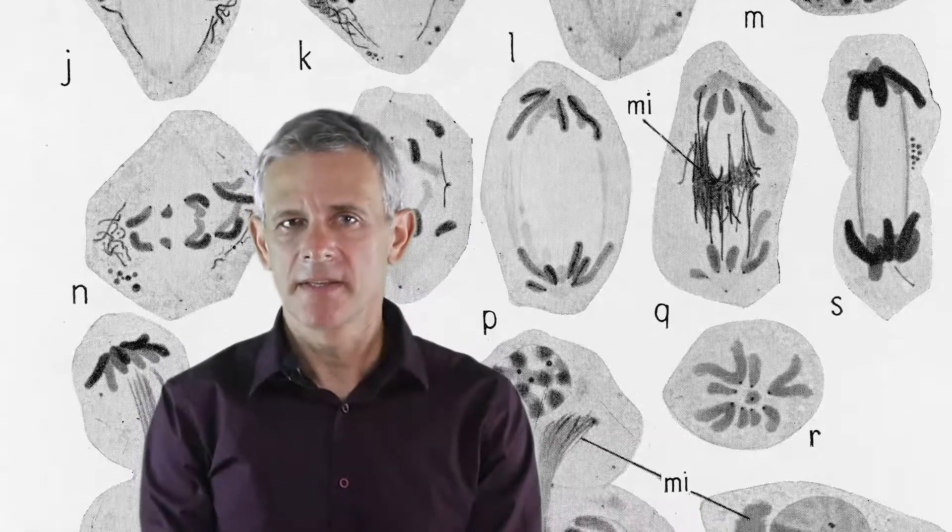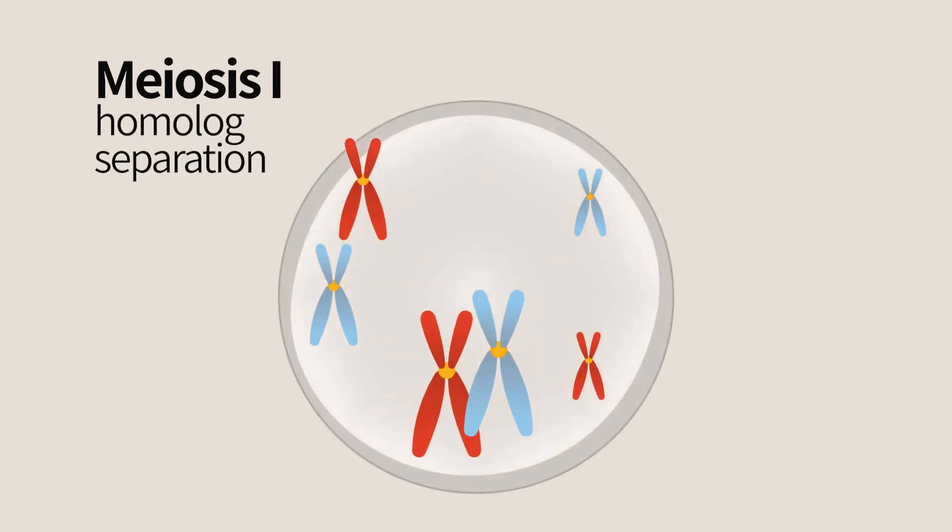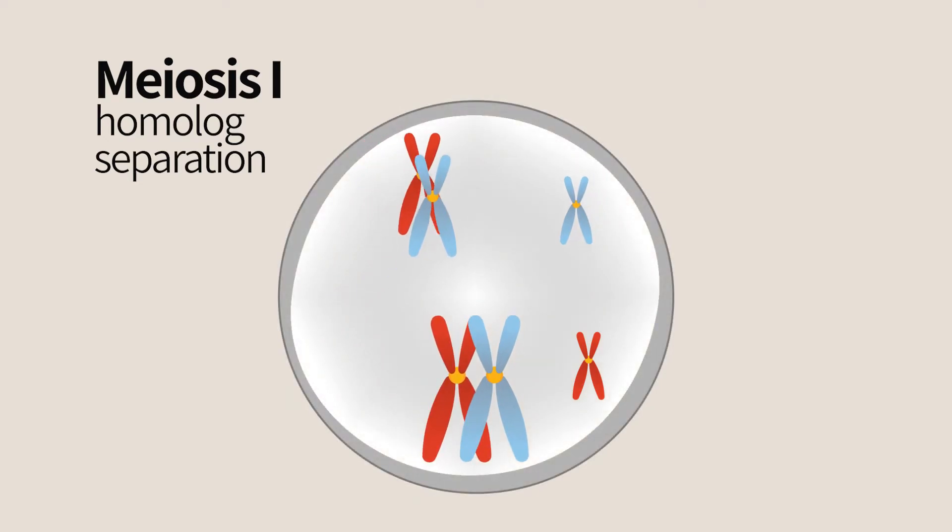In meiosis, there is an intermediate stage between sister replication and their segregation. During this intermediate stage, called meiosis 1, the homologues are separated. In contrast to the sister chromatids that are glued together from the moment they were created, homologues are independent chromosomes that are not connected to each other.